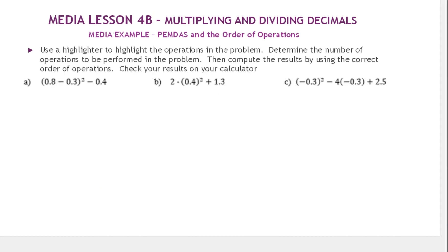Read the directions: use a highlighter to highlight the operations in the problem, determine the number of operations to be performed, then compute the results using the correct order of operations, and check your results on your calculator. Knowing what operations you have to perform and how many helps you make sure you're following them in the correct order and that you've done everything you needed to do.